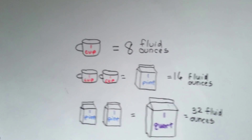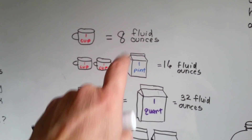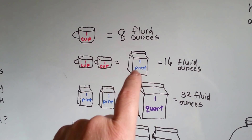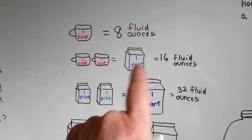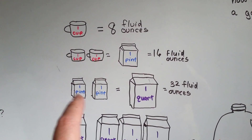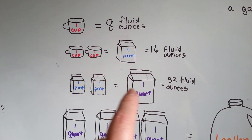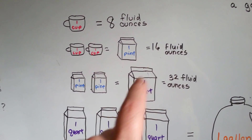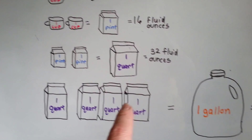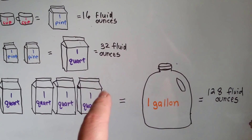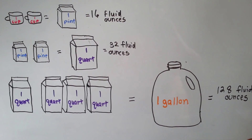We talked about liquid volume in the last video. One cup is equal to eight fluid ounces, and two cups is equal to one pint, so a pint is 16 fluid ounces. Two pints is equal to one quart, so two sixteens — 16 plus 16 is 32 — equals one quart. There are four quarts in a gallon, so four times 32 fluid ounces is 128 fluid ounces in one gallon.